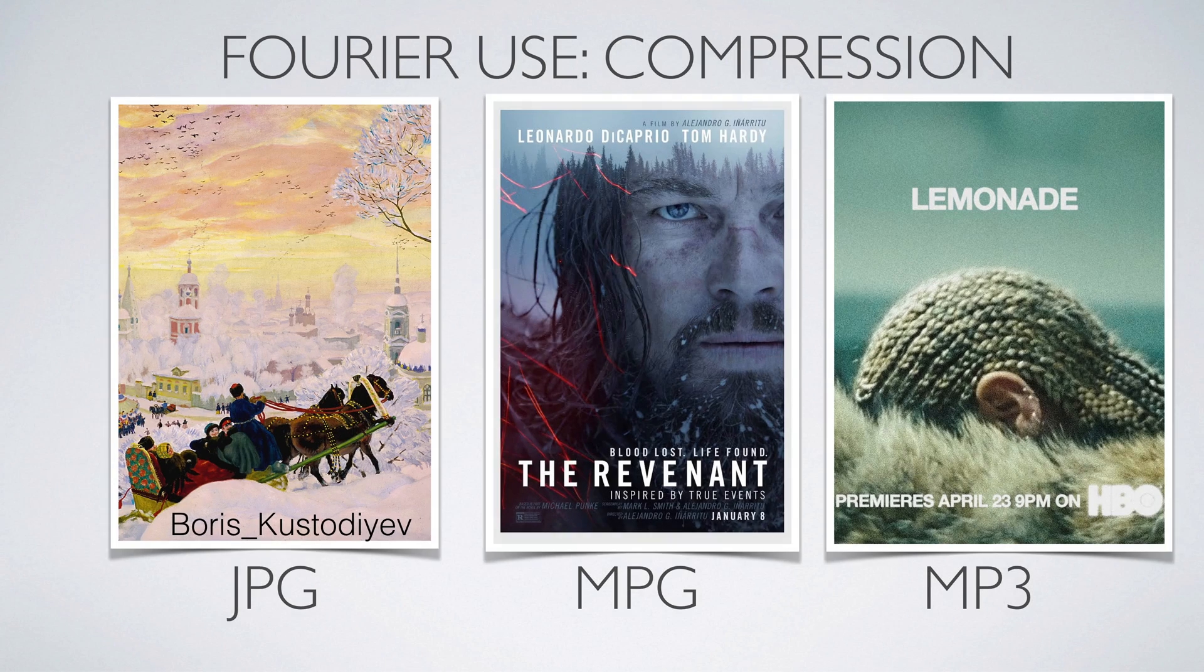Fourier theory is used to compress pictures, movies or songs. There are various formats. The most popular are JPEG for pictures, MPEG for movies and MP3 for sound. The compression rate is spectacular.